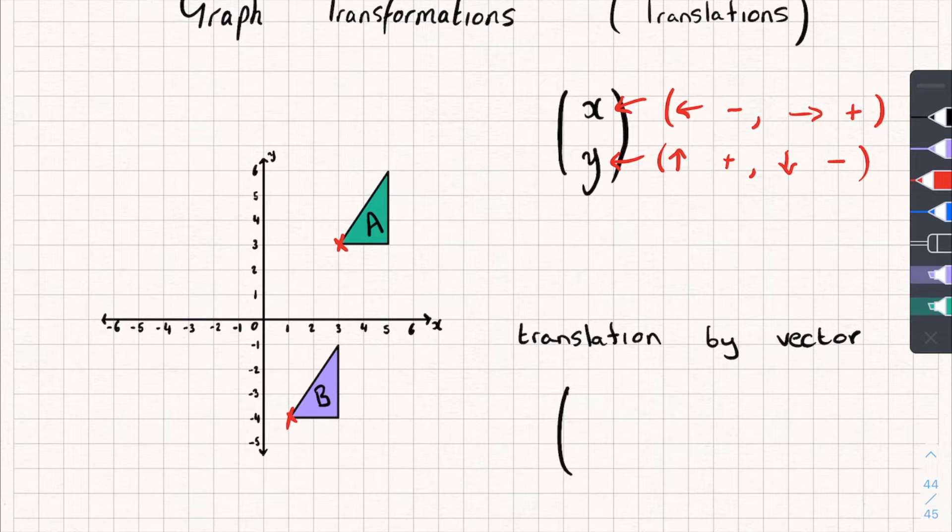So how far to the right or left do I have to move this point here to get it in line with the one on shape B? Well, I have to move it over once, twice. I have to move it twice to the left, which means it's a negative, so I put negative two.